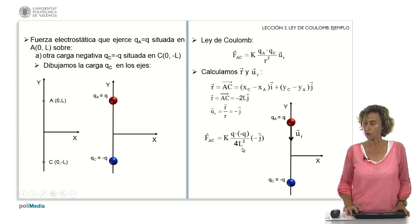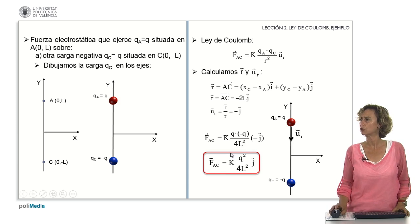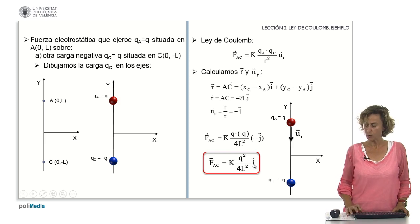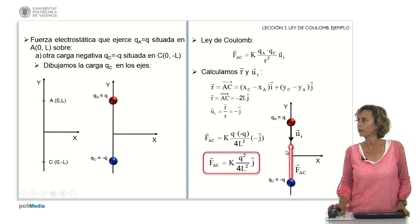Minus times minus is plus. So we finally get that force is K*Q squared divided by 4L squared times j. Then when we draw it, we see that the force and U sub R have opposite senses, since we had charges of different signs.